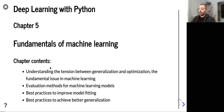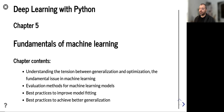The chapter contents: first we will try to understand this tension between generalization and optimization, which is the fundamental issue in machine learning. We will explain what is optimization, what is generalization, what we try to achieve at each phase and how we will try to achieve it. We will also see various evaluation methods and best practices to improve model fitting and achieve better generalization.